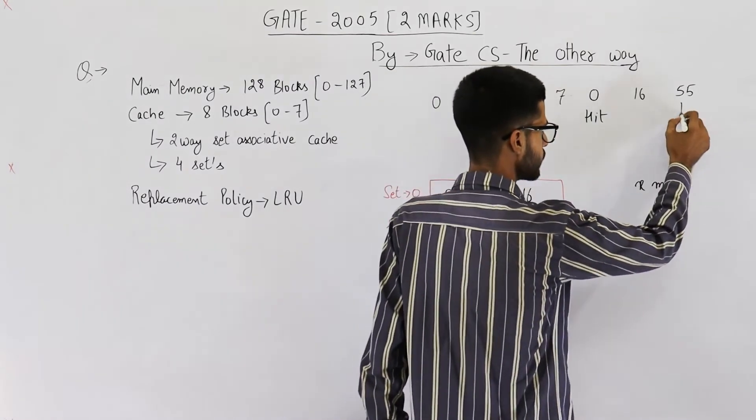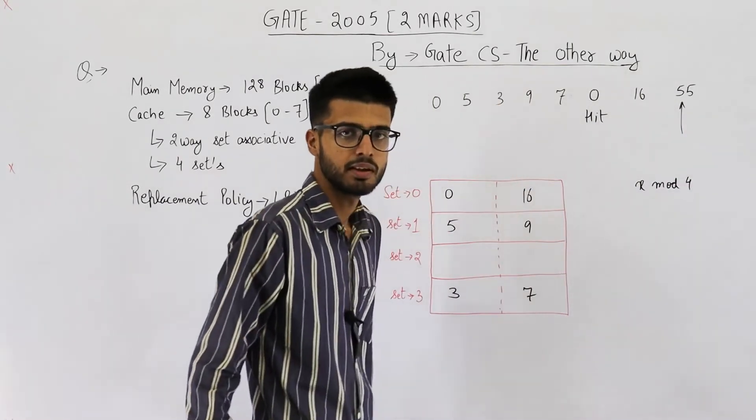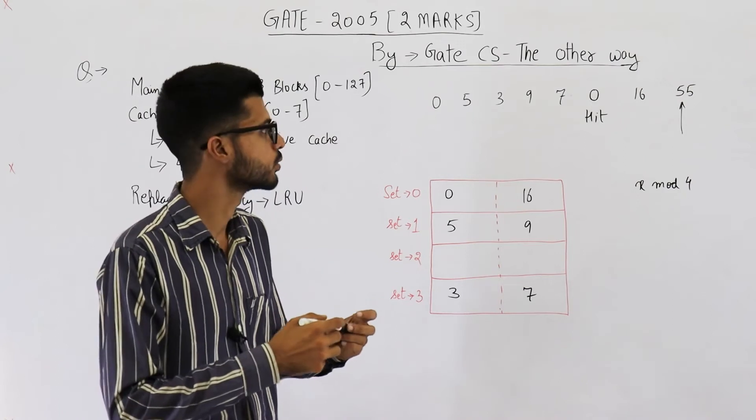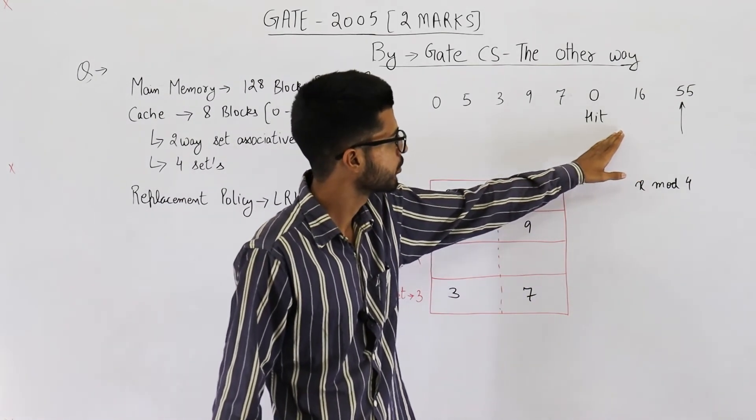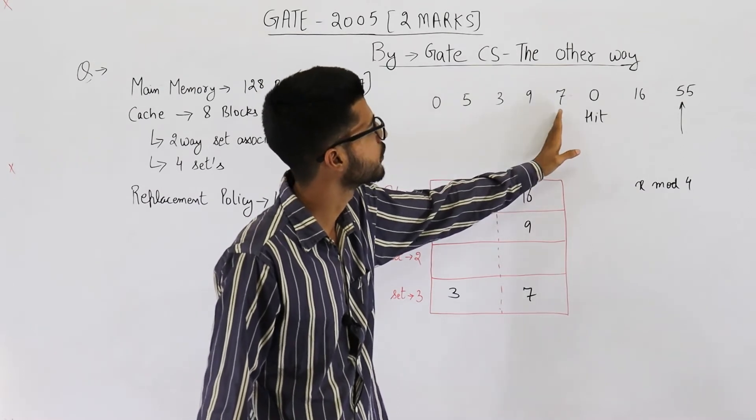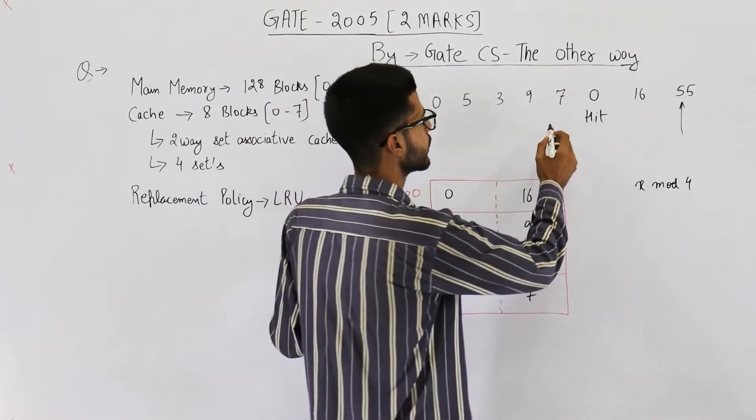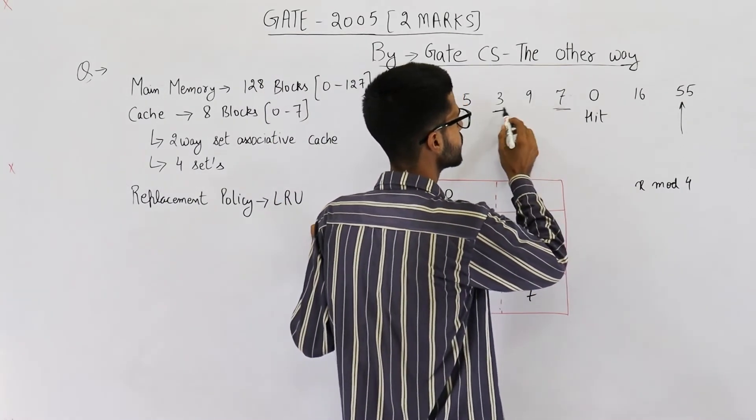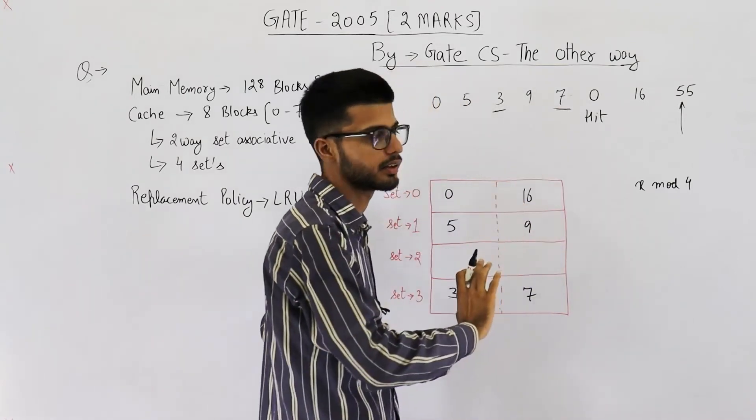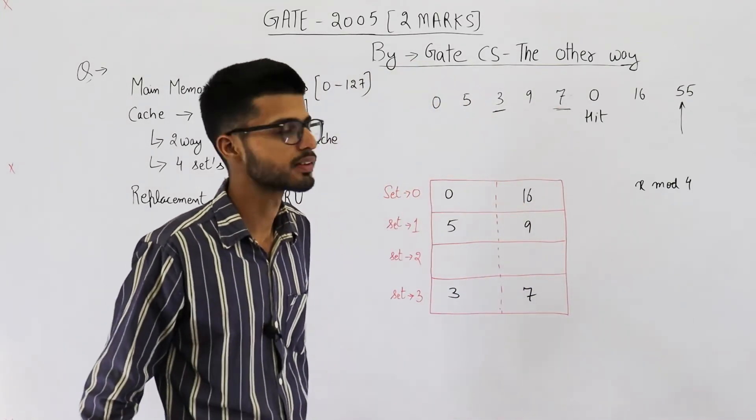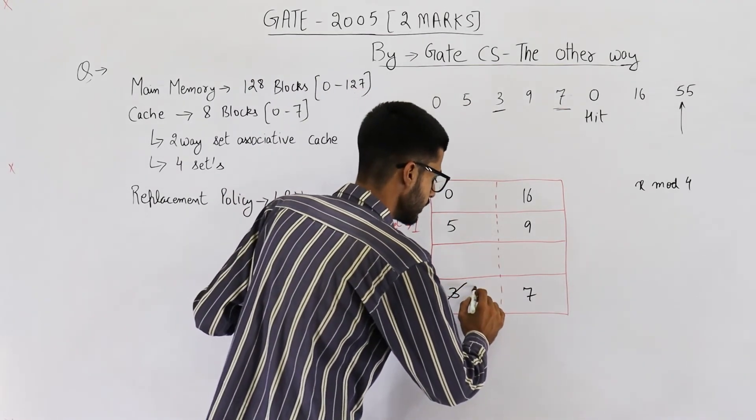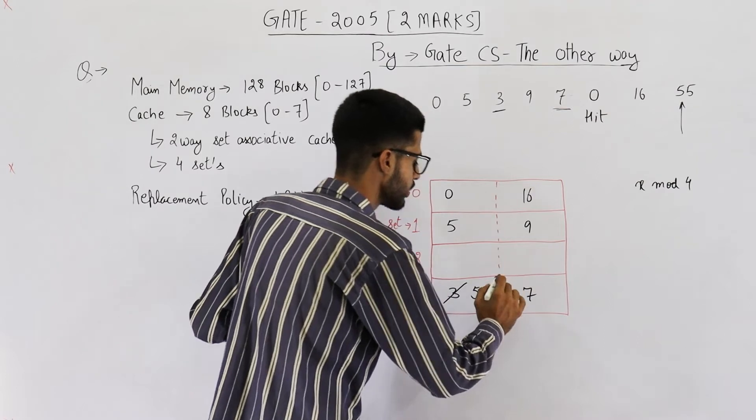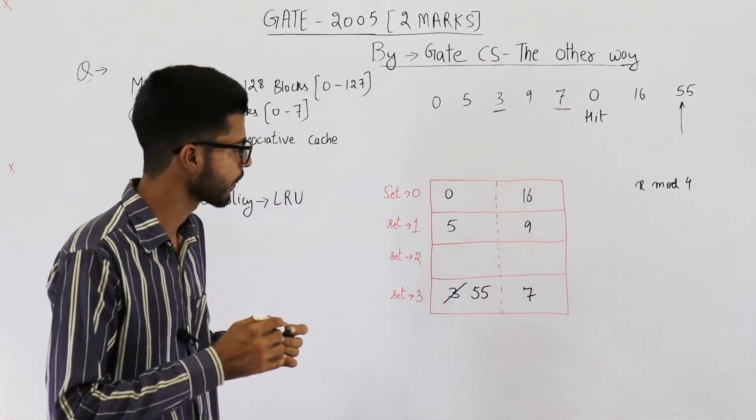Look, out of 7 and 3, you just keep going back in time and you find 7 before 3. 7 is here. 3 is here. 7 is used recently. 3 is not used recently. So, it is least recently used. Hence, you will delete 3 and bring block number 55 here.